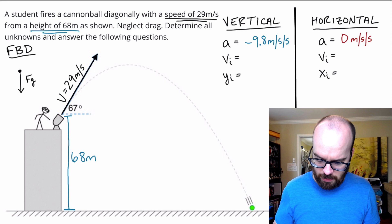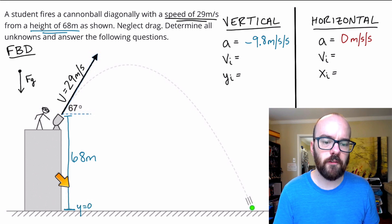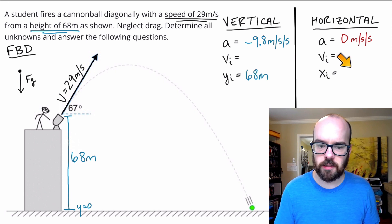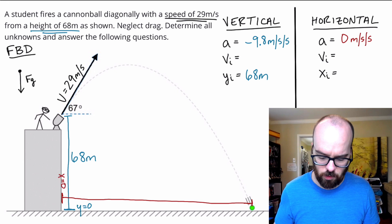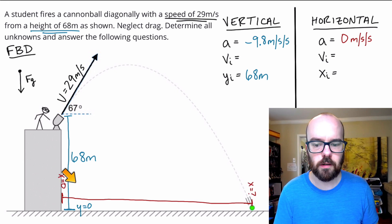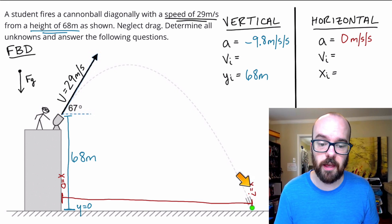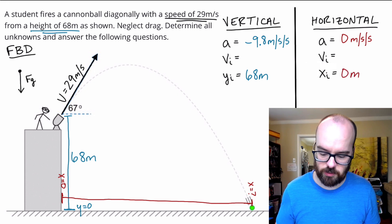Next, let's identify the initial height. I'm going to define the ground as y equals zero, which means this height is 68 meters — I'll label that as my initial height. Horizontally, we'll start with zero at the base of the building and go to the right. We don't know the final x position; we're going to solve for that. So our initial horizontal position is just zero meters.